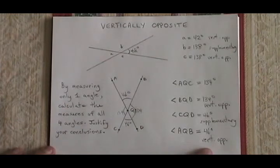The vertically opposite rule is very easy to apply and will happen any time you have two straight lines that cross each other.